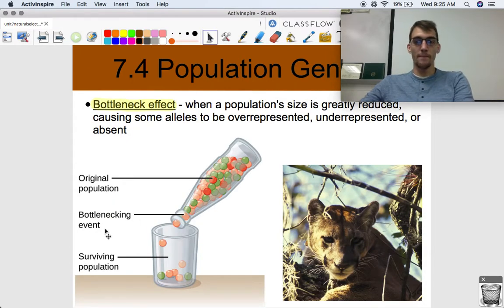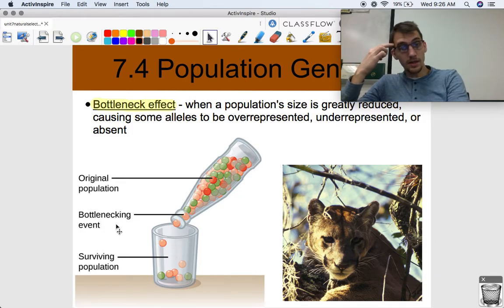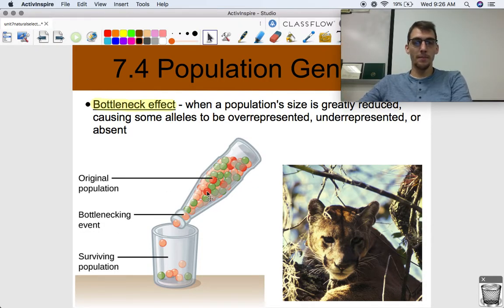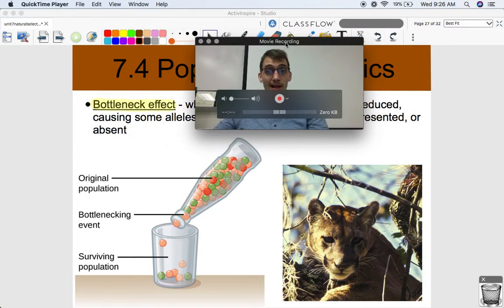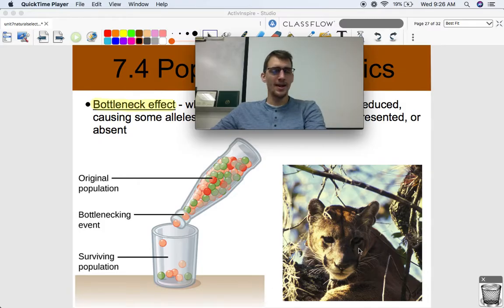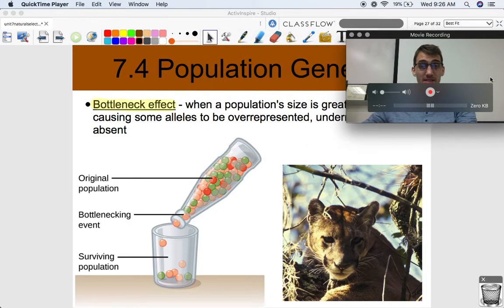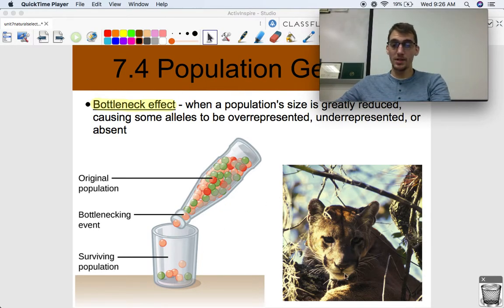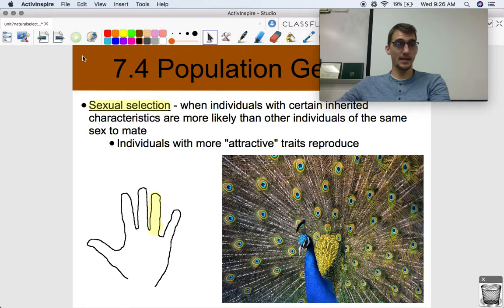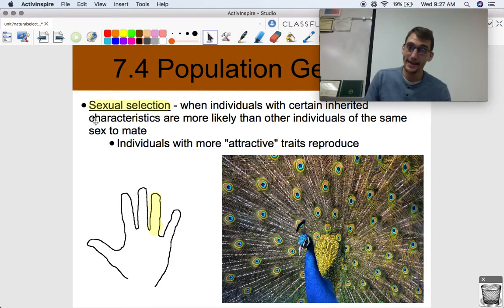Another example of genetic drift is what we call the bottleneck effect, and this is the more sad one. When a population's size is greatly reduced, causing some alleles to be overrepresented, underrepresented, or absent. Here's an image, we call it the bottleneck effect, because we take a really big population, and if we only cut it down to a very small population, that means the allele frequencies are going to be very different. That's what happens to a lot of different types of wild cats, particularly one called the Florida panther. The Florida panther underwent a bottlenecking event, the same as those prairie chickens I was discussing before. And these individuals have way less genetic variation than they used to, and inbreeding occurs. It's a really bad scenario for this tiny population of Florida panthers. That's a bottleneck effect.